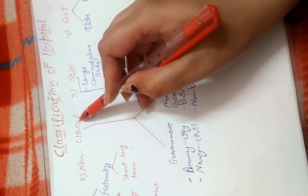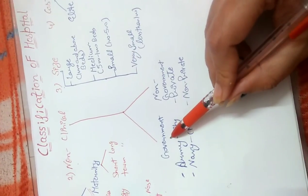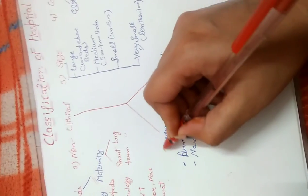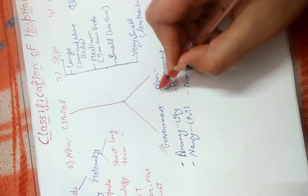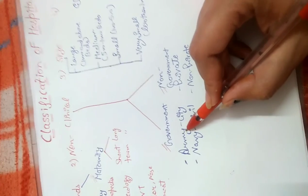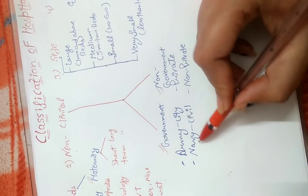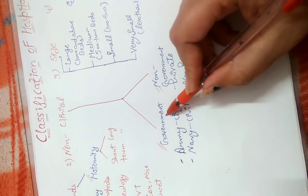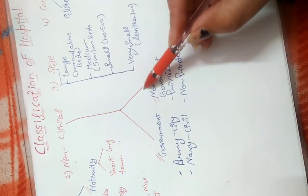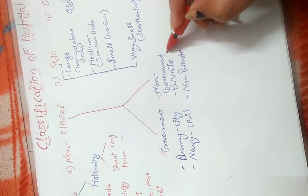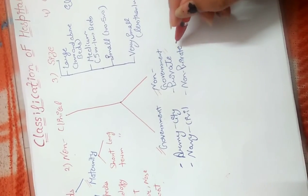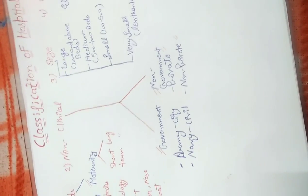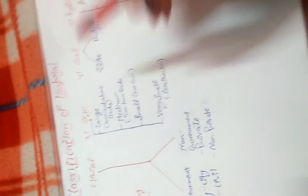Second classification is non-clinical grounds, divided into two categories: government and non-government. Government hospitals include army hospital, city hospital, navy hospital, and civil hospital. Non-government hospitals include private hospitals — for profit — and non-private like small and medium-sized hospitals.